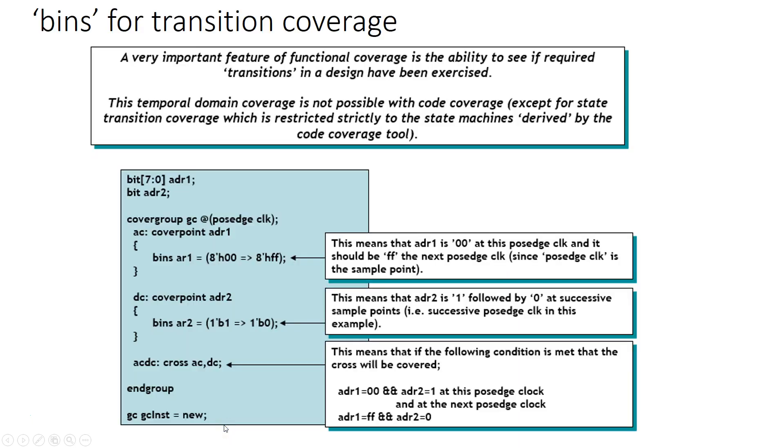So let's dive deep into the syntax and semantics of transition coverage. Let's look at this example. Here I have two variables ADR1 and ADR2. I have declared a cover group called GC whose sampling point is at positive edge of clock. Inside the cover group I have two cover points, cover point for ADR1 variable and cover point for ADR2 variable.